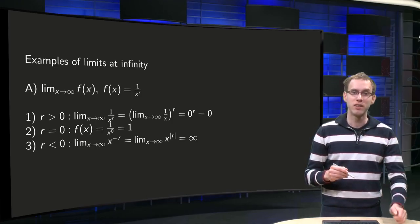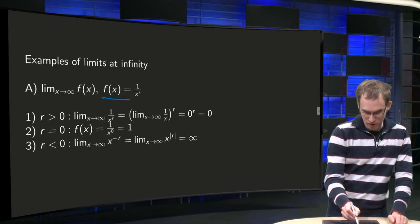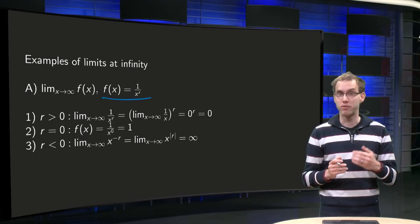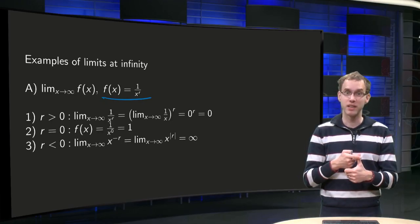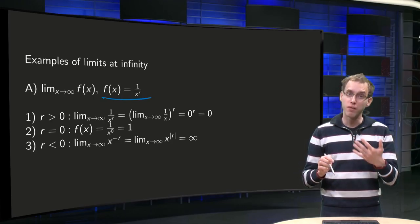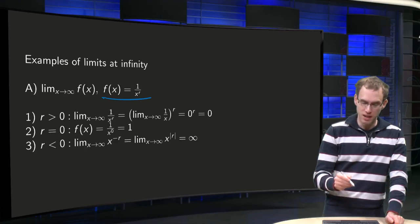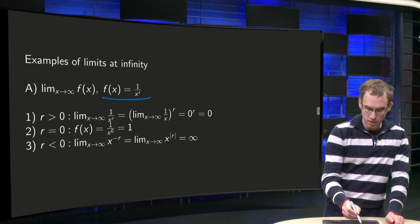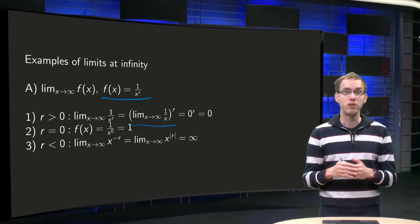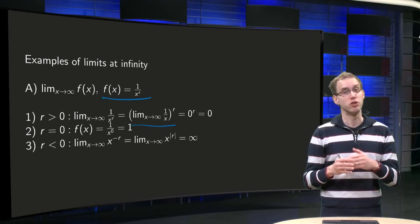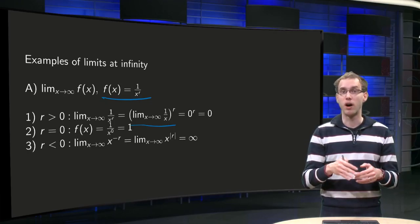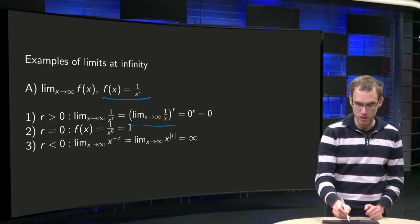Let's start with the limit of x to infinity of f(x) = 1 over x to the power r. We have to distinguish three cases: r bigger than 0, r equals 0, and r smaller than 0. If r is bigger than 0, we can take the limit inside, so we get the limit of 1 over x to the power r equals 0 to the power r, where r is some positive power, and 0 to some positive power equals 0.